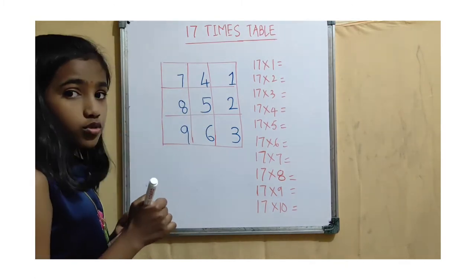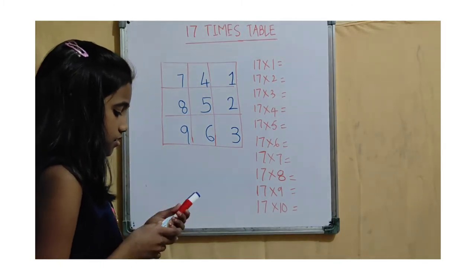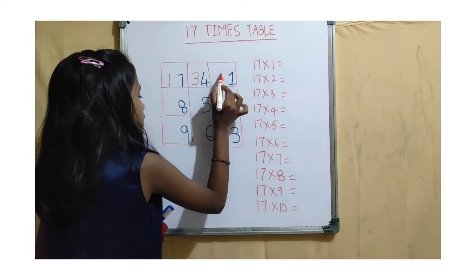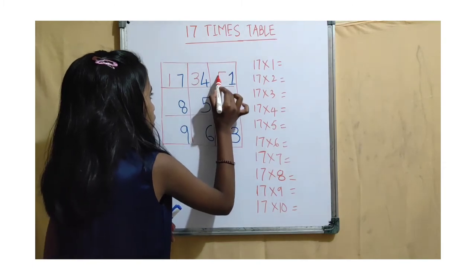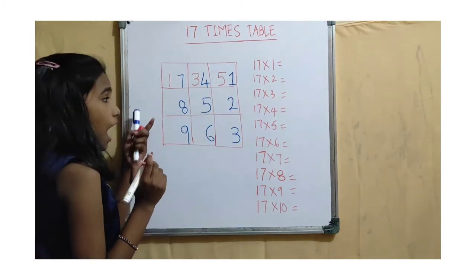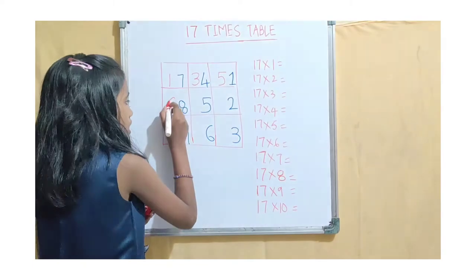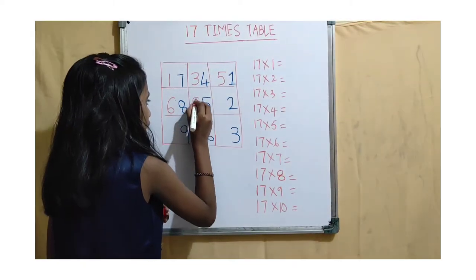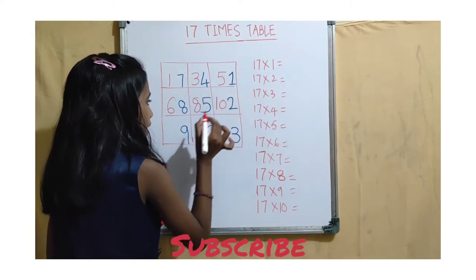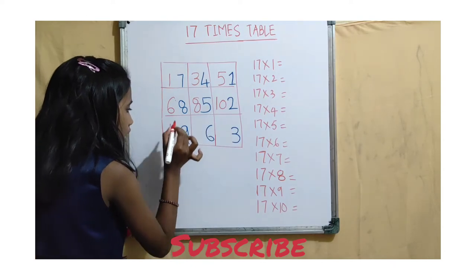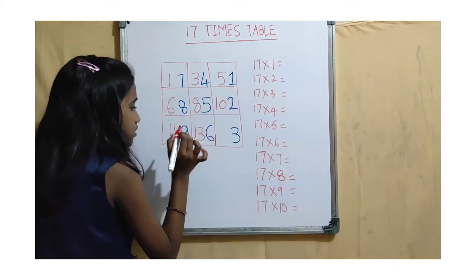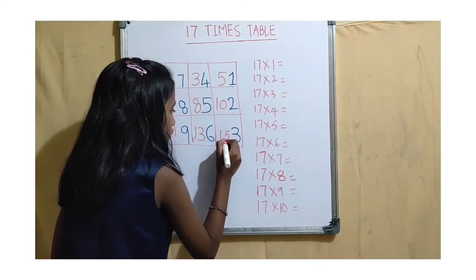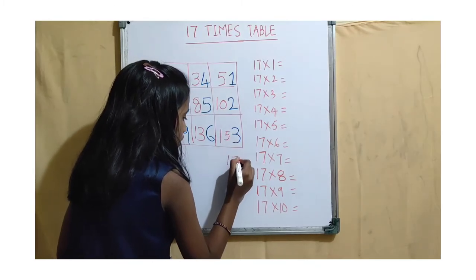Now we have to write odd numbers: 1, 3, 5, and here even numbers: 6, 8, 10, 11, 13, 15, and here 170.